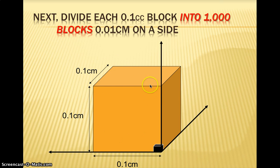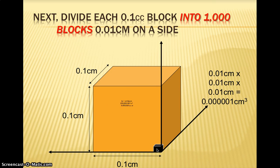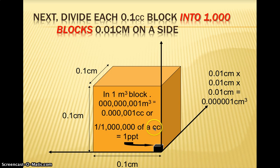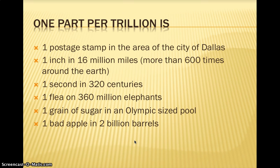To get one part per trillion, take one of the part-per-billion boxes and divide it by a thousand again. That's only a hundredth of a centimeter on each side — one millionth of a cubic centimeter — which gives one part per trillion. It would be like one postage stamp in the area of the city of Dallas, or one inch in 16 million miles — more than 600 times around the Earth — or one second in 320 centuries, or one flea among 360 million elephants. One part per trillion is incredibly small.